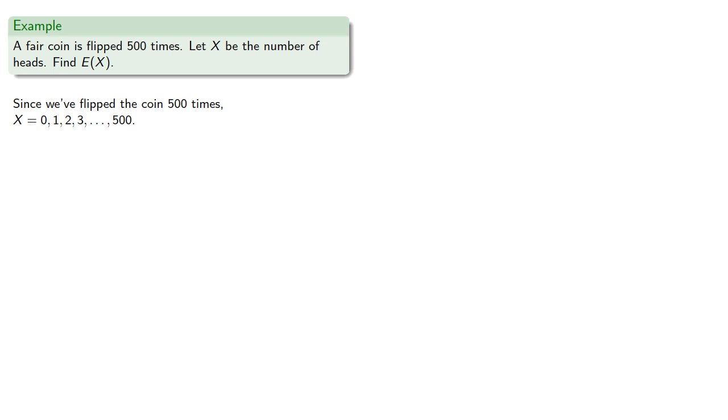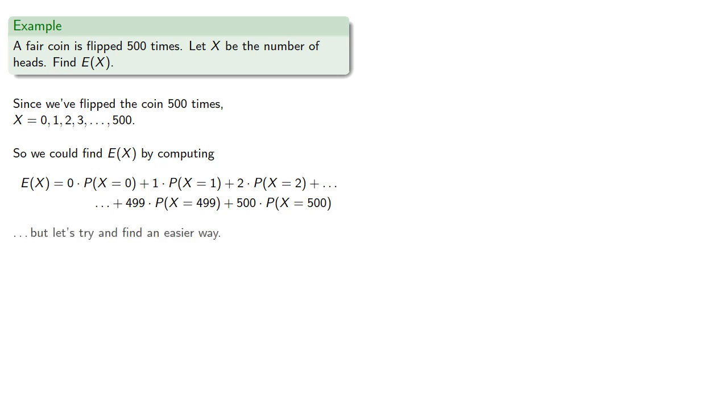So we could find our expected value of X by computing the sum of the products of the outcomes with their probabilities. But that's a lot of work, so let's try and find an easier way.